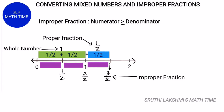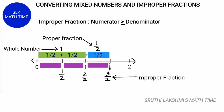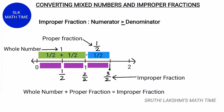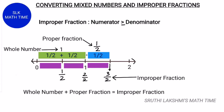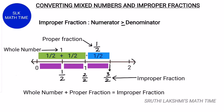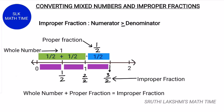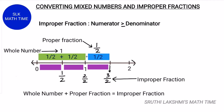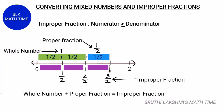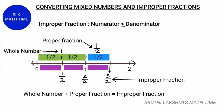So, 3 by 2 turns out to be equivalent to 1 and 1 half. This diagram shows how proper fractions, improper fractions, whole fractions, and mixed numbers all relate to each other. On this side of the number line, we have 3 halves, which is the improper fraction 3 by 2. Notice how we got it: we added a proper fraction, 1 by 2, to a whole fraction, which is 1. When we added one more half, it became 3 by 2, an improper fraction. So one way to think of an improper fraction is that it's a combination of one or more whole numbers, one or more whole fractions, and a proper fraction.